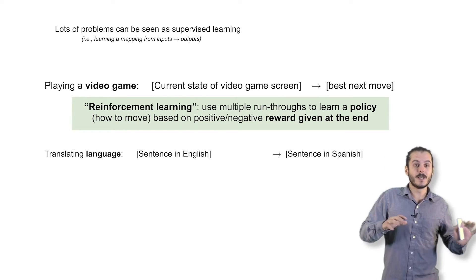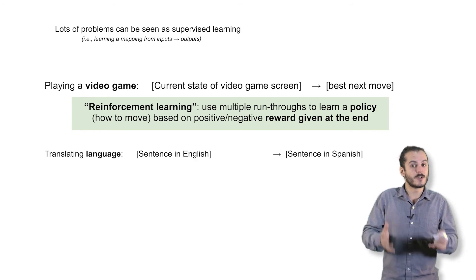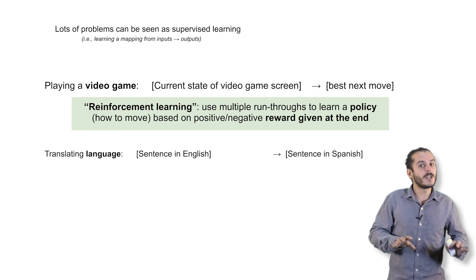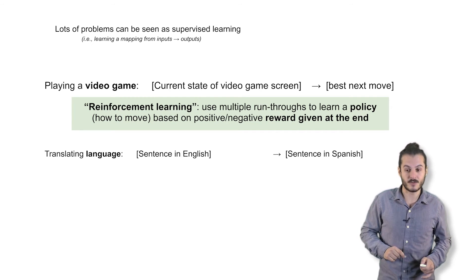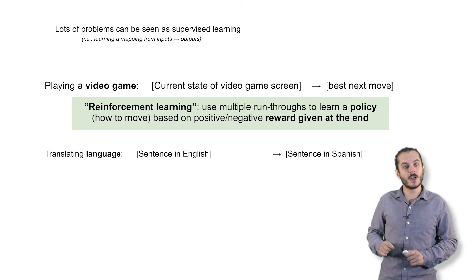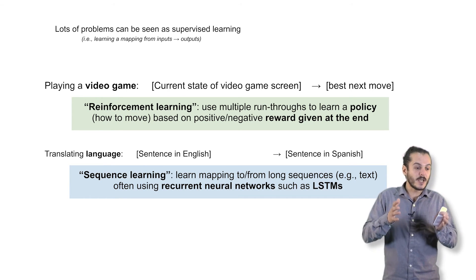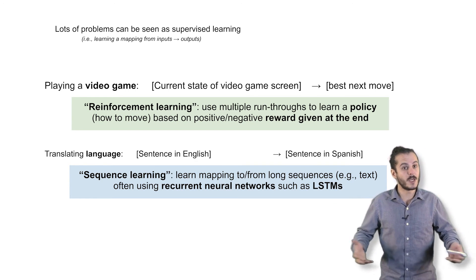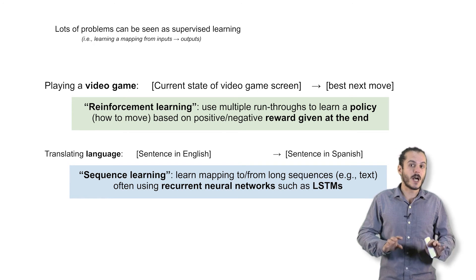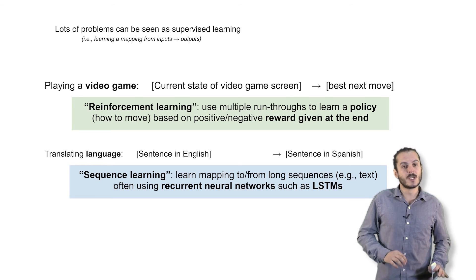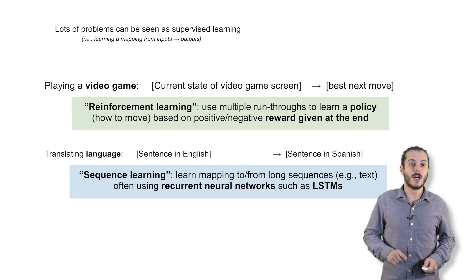Another example of a supervised learning problem is machine translation: given a sentence in English, the algorithm learns to translate it to a sentence in Spanish. Traditionally this has been a difficult task, but there has been great success recently. You may hear the term sequence learning in this context, which means the input or output is a long sequence — like a sequence of words in language. You'll also hear about recurrent neural networks and long short-term memory networks, or LSTMs, which are the reason there have been many advances in language translation recently.